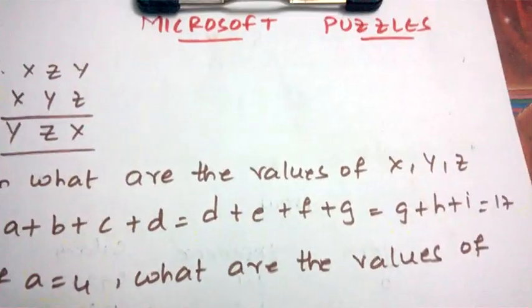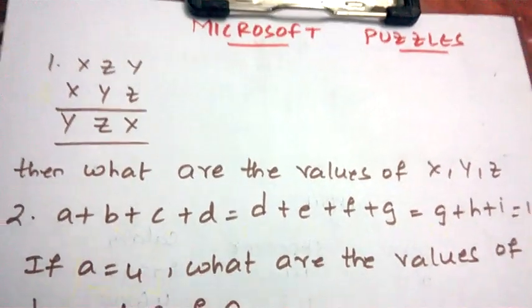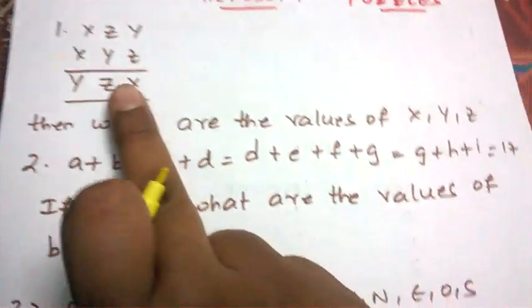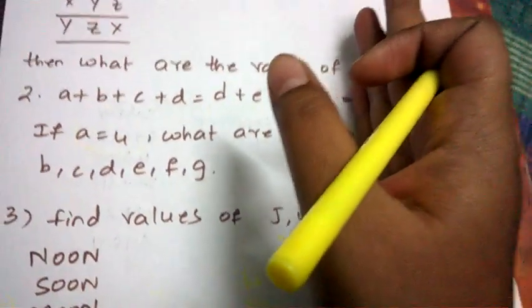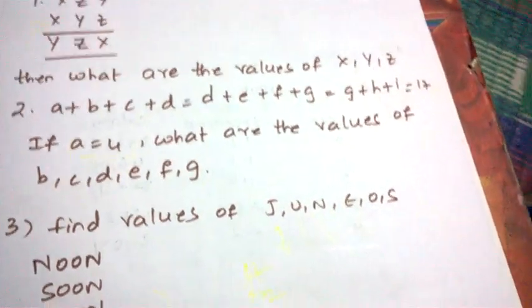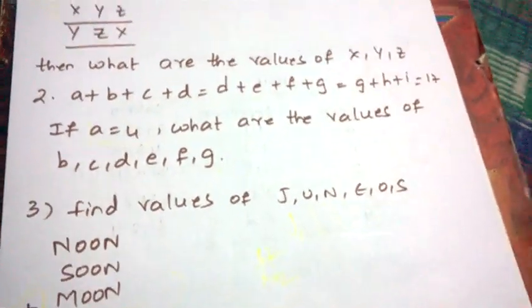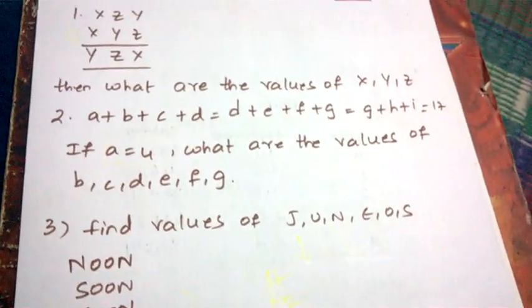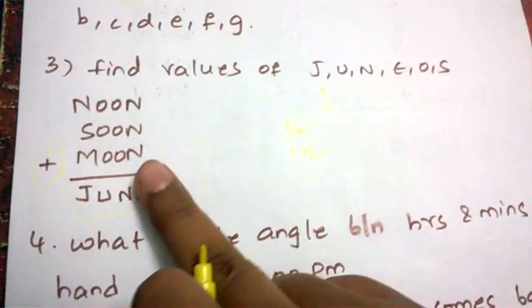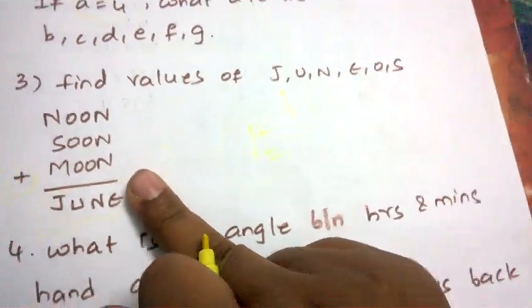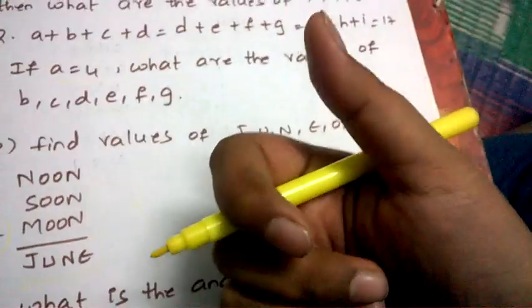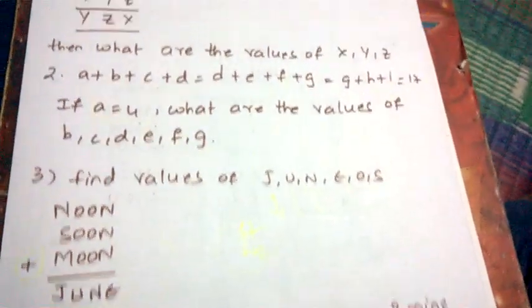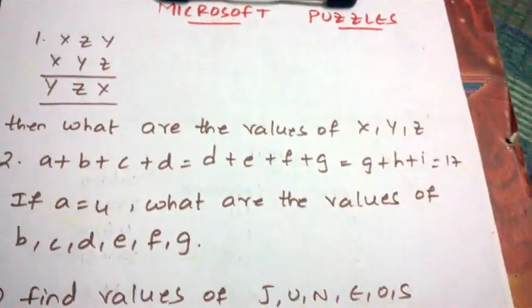So those are the most common Microsoft puzzles and written test questions. My suggestion is to concentrate mostly on cryptarithmetic problems and time, speed, and distance problems so that you can crack the Microsoft written test easily. Make sure your time management is appropriate because cryptarithmetic problems are far more time-consuming than you might believe. Thank you so much for watching — don't forget to subscribe and hit the bell icon, and all the very best for your Microsoft written test.